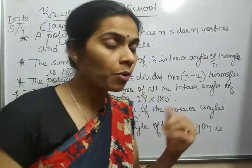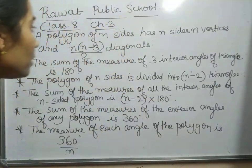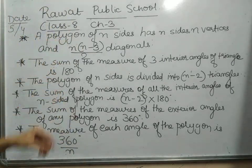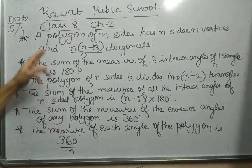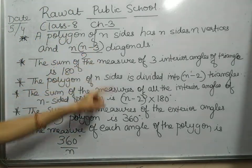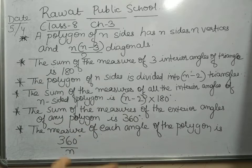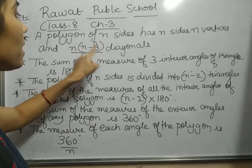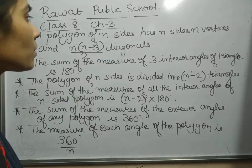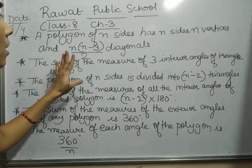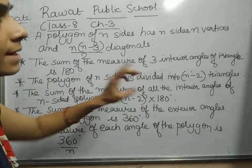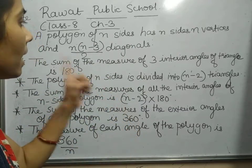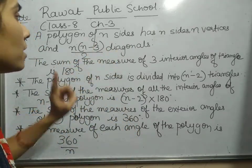Some important points from the chapter, and then we will start with Exercise 3.1. The first point is: a polygon of n sides has n sides, n vertices, and n(n−3)/2 diagonals. By this formula we can find out how many diagonals a given polygon has.